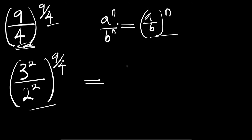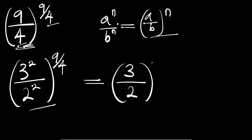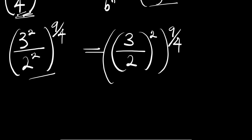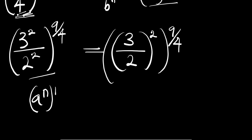We are going to have (3 divided by 2), all to the power of 2, and all to the power of 9 divided by 4. Now, if you have a to the power of n, all to the power of m, this equals a to the power of n times m.